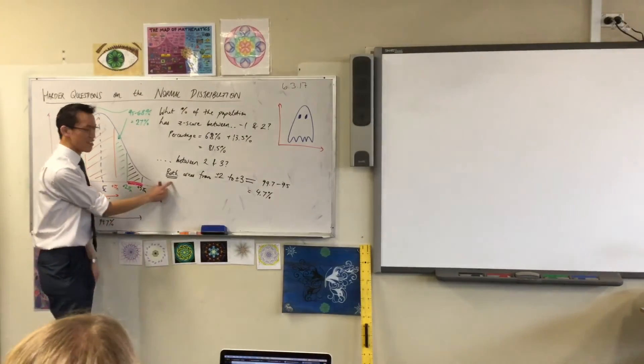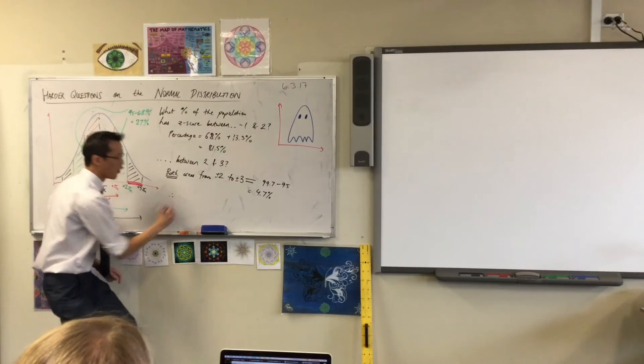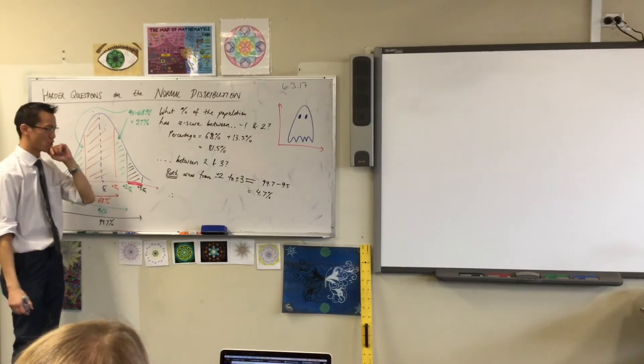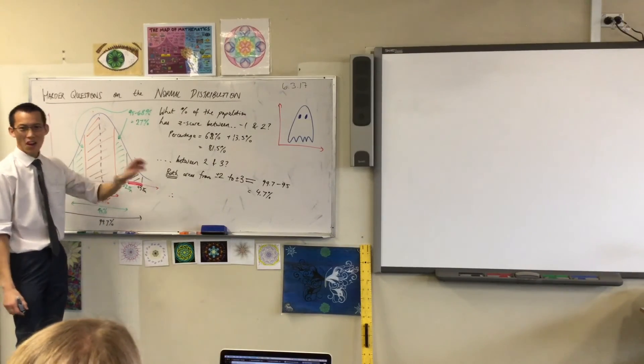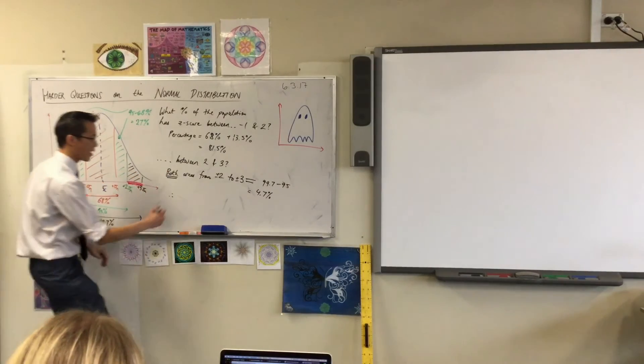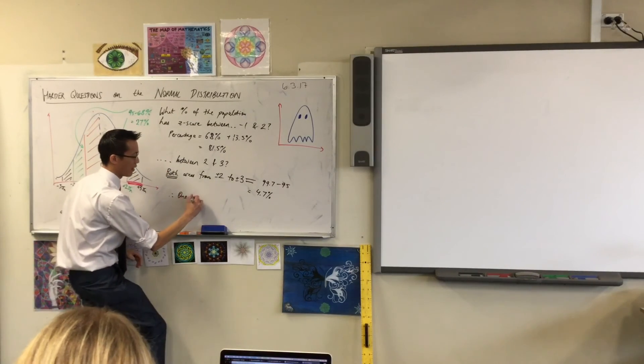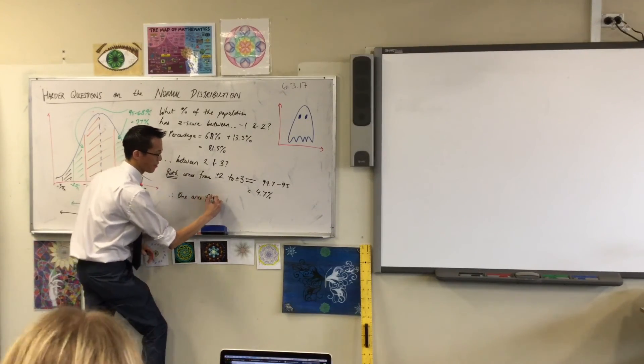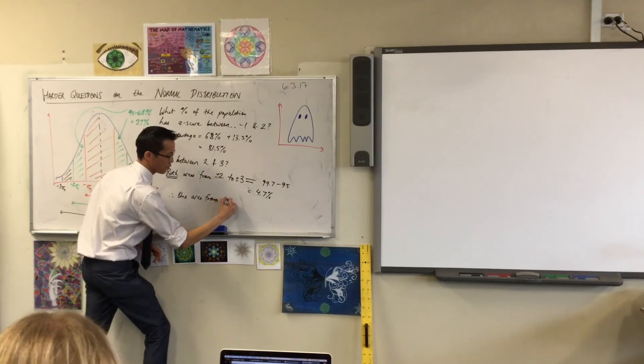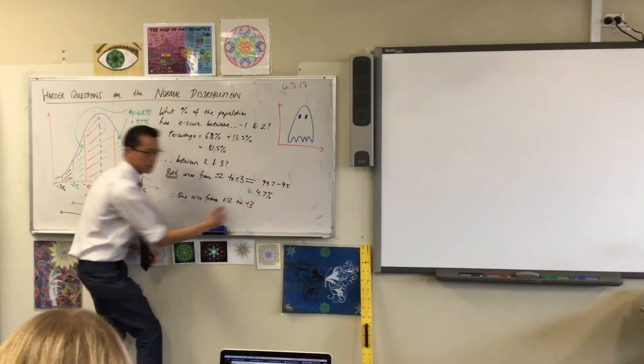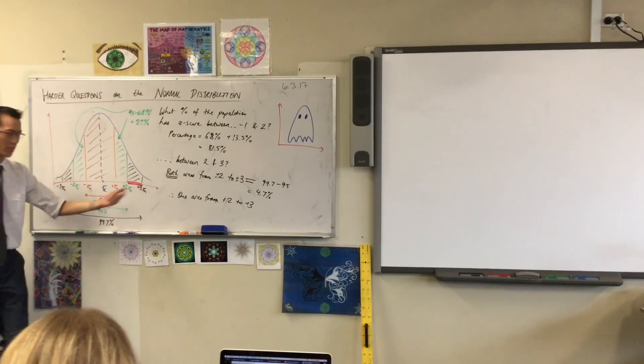Actually, I did it in the last step. You see the logic? So therefore, once I've said both areas, now I'm going to say one area from plus two to plus three. Now I know which side I'm talking about. It's going to be exactly half of the area I worked out before, because it's perfectly symmetrical.